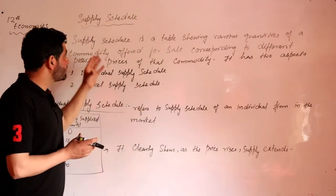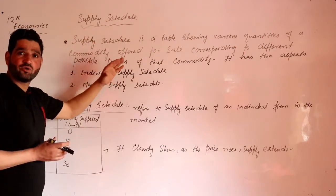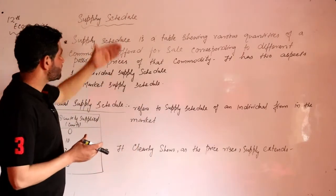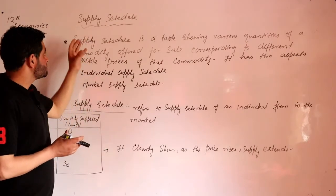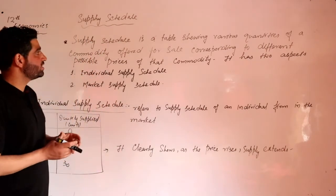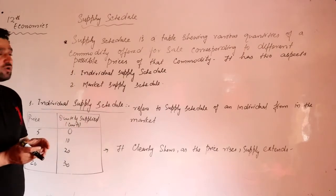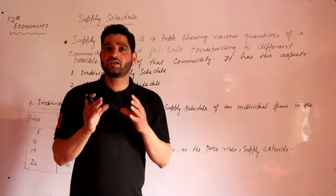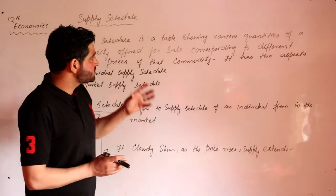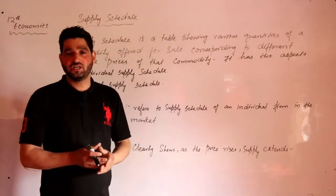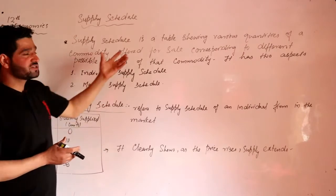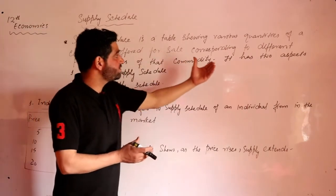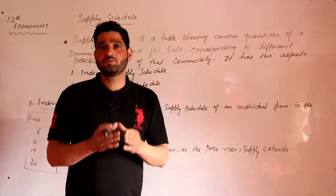Dear students, here we will learn what a supply schedule is, with examples. After that we will also cover the supply curve. So, the supply schedule is a table showing various quantities of a commodity offered for sale corresponding to different possible prices of that commodity. The supply schedule is simply a table — a combination of rows and columns — which shows the various quantities of a commodity that a producer or seller is ready to sell at different possible prices in the market.